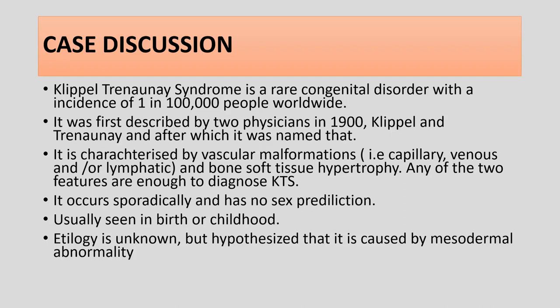Klippel-Trenaunay syndrome is a rare congenital disorder with an incidence of 1 in 100,000 people worldwide. It was first described by two physicians in 1900 — Klippel and Trenaunay — after whom it was named. It is characterized by vascular malformations (capillary, venous, and/or lymphatic) and bone and soft tissue hypertrophy. Any two of these features are sufficient to diagnose KTS. It occurs sporadically and has no sex predilection, and is usually seen at birth or in childhood. Etiology is unknown but hypothesized to be caused by mesodermal abnormality.